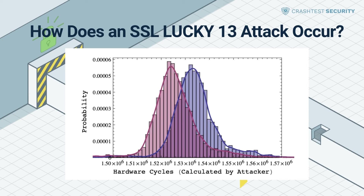As such, the SSL Lucky 13 does not pose a grave threat to most TLS users. However, due to the widespread use of TLS, attacks against the protocol must be monitored and evaluated. More generally, this type of attack demonstrated flaws in the CBC cipher suites used by TLS and DTLS protocols. However, since there are newer and better ciphers, mitigation against this type of attack can easily be achieved.